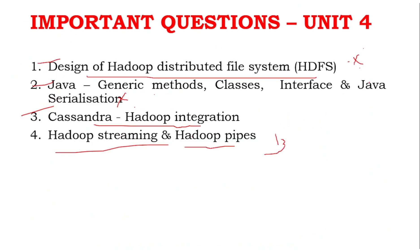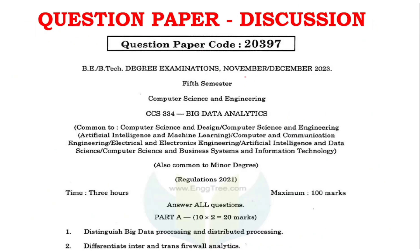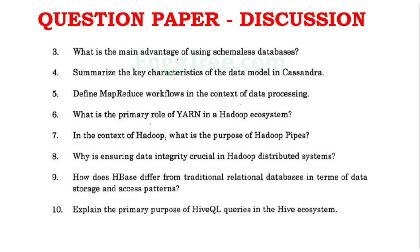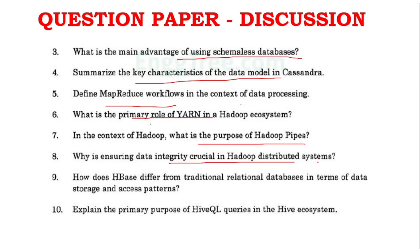Now we will see the question paper discussion. We have taken the November/December 2023 question paper. The questions include: big data processing and distributed processing differentiate, inter and trans firewall analytics, main advantage of schema-less databases, key characteristics of data model in Cassandra, MapReduce workflow and primary role of YARN, purpose of Hadoop pipes, data integrity in Hadoop distributed system, how HBase differs from traditional relational databases, and primary purpose of HiveQL queries.